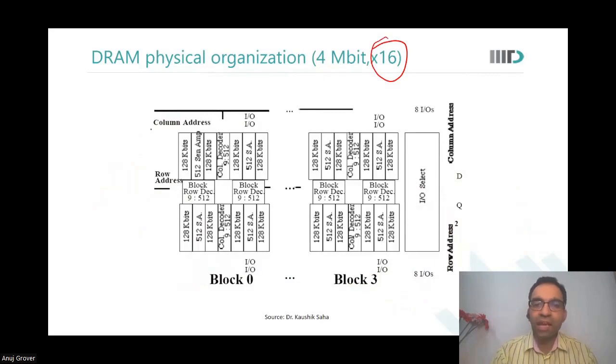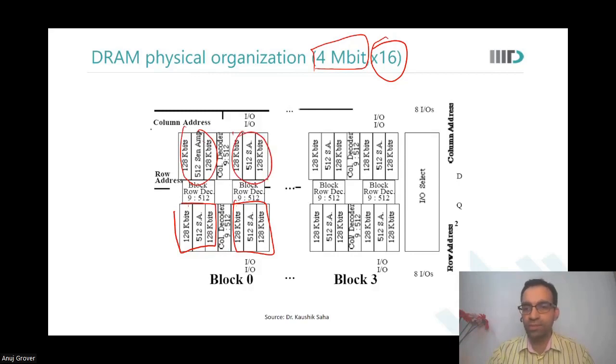If I have 16 blocks, then I would need 16 bits at the output. So this particular memory is organized as 512 rows and 512 columns. For four megabit capacity, I have 16 bits. So I go to 16 such pages, one page, two page, three page, four page and 16 such pages.